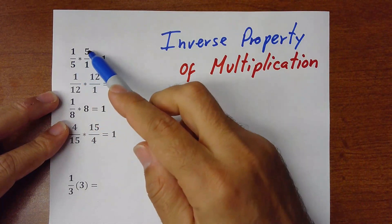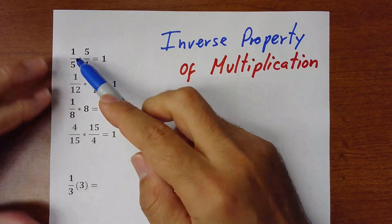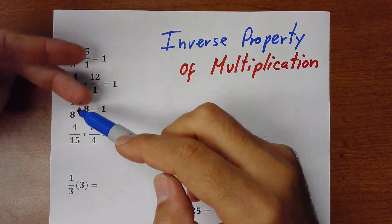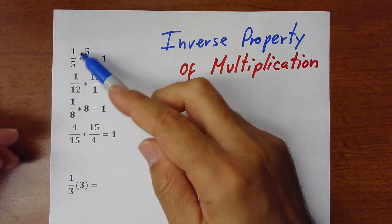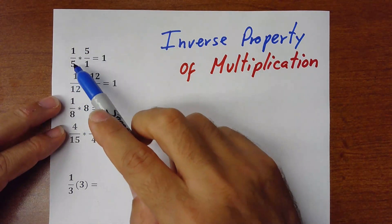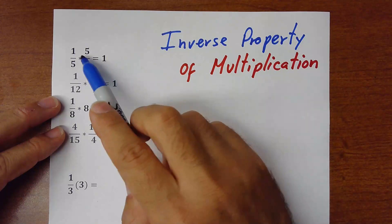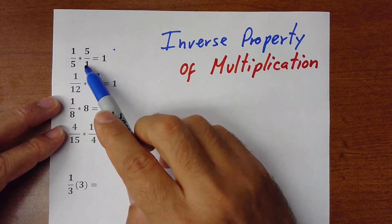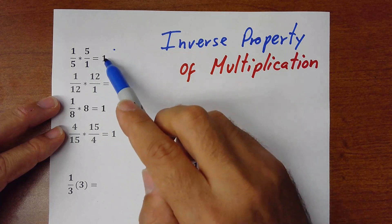1 over 5 times 5 over 1. So basically what we did is we flipped the fraction. That's what's called the inverse. And the answer would be 1 because 1 times 5 is 5, 5 times 1 is 5, and 5 over 5 is 1.